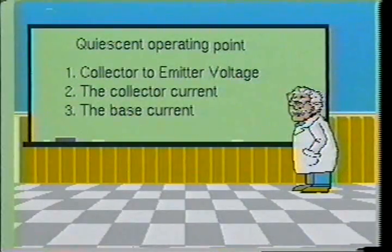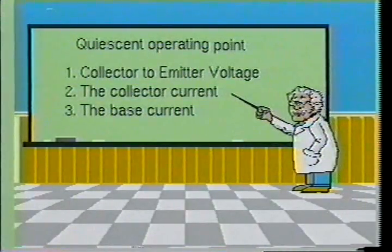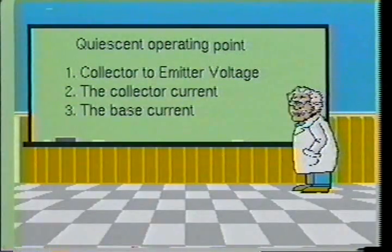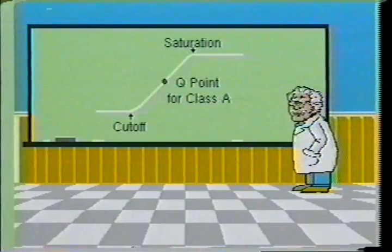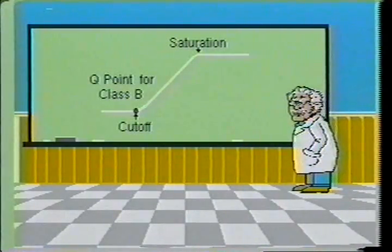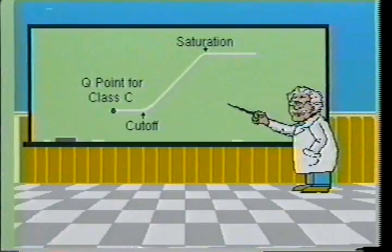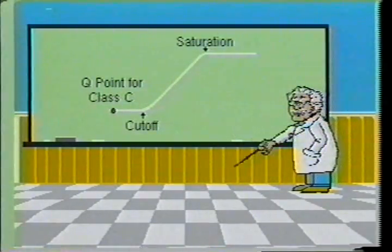The quiescent operating point is set by three parameters: one, the collector-to-emitter voltage; two, the collector current; and three, the base current. The Q point of a class A amplifier will be located at the midpoint of the linear portion of the characteristic curve. The Q point of a class B amplifier will be located at the cutoff point on the characteristic curve. And the Q point of a class C amplifier will be located at approximately two and one half times the cutoff point. Class C amplifiers are never used for audio reproduction.